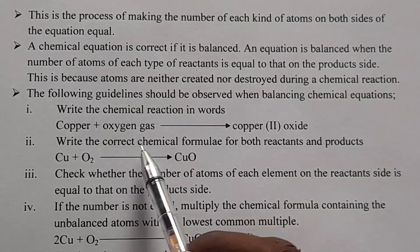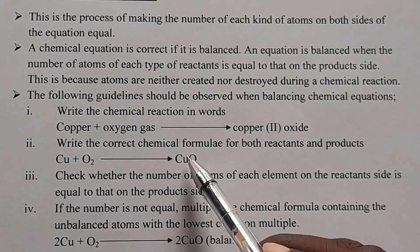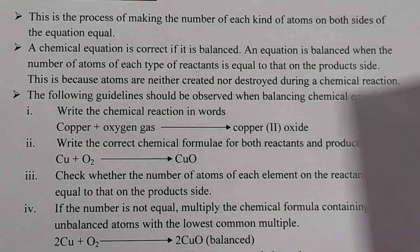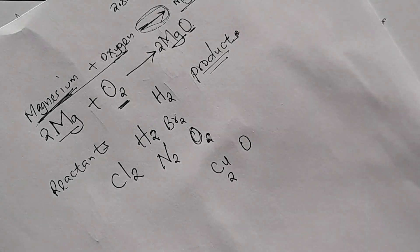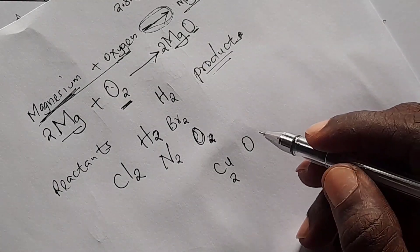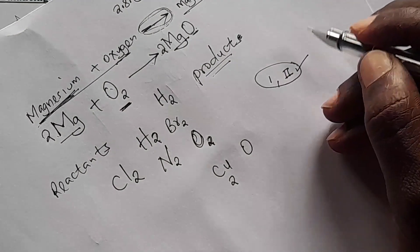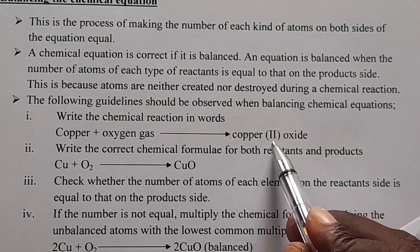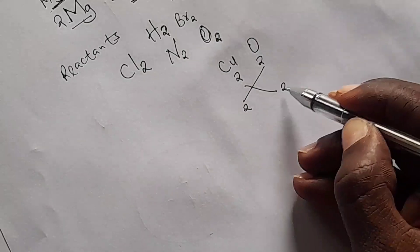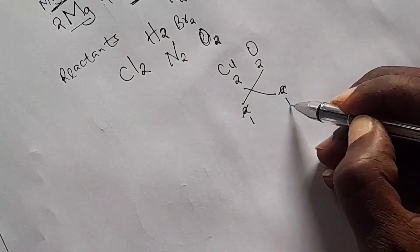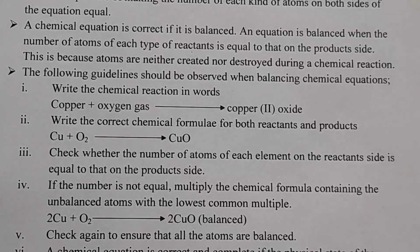Oxygen exists in molecular form, so we write O2. Then for the product, copper(II) oxide — when writing its chemical formula, you check that copper has a valency of 2 and oxygen has a valency of 2. When you interchange them you get 2 and 2; the common factor is 2, so dividing gives 1 and 1. Therefore the formula of copper(II) oxide is CuO.